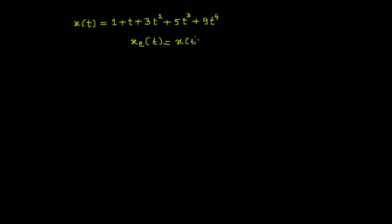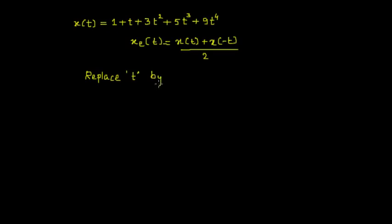x of t plus x of minus t, divided by 2. From the given equation we know what x of t is, but we don't know what x of minus t is. So what we have to do is find x of minus t from x of t — we have to replace t by minus t in the given equation. I call the given equation equation 1.